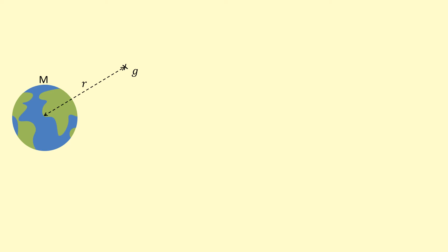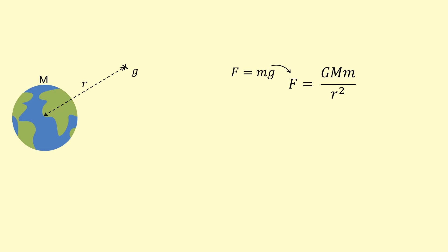Now instead of finding the force on a particular mass, I want to find the gravitational field strength at some point at distance r from the center of the Earth. I can use Newton's law of gravitation, but I don't need the lowercase m. I know that gravitational field strength g is force per unit mass, so I write F = mg and substitute that in, then cancel out the m's.